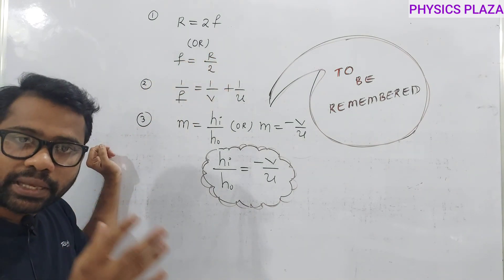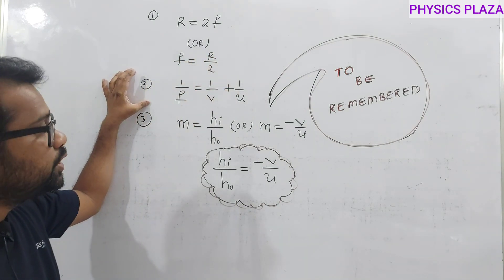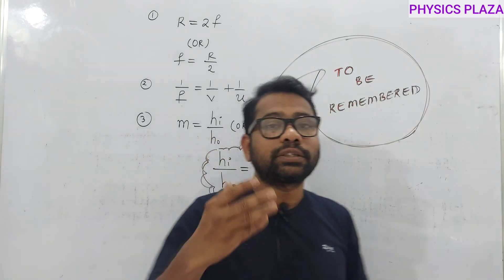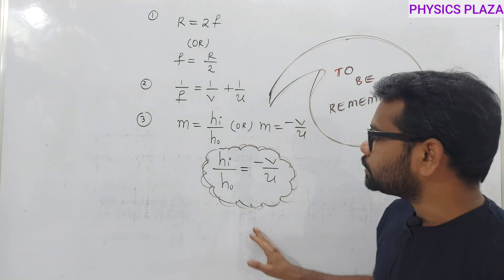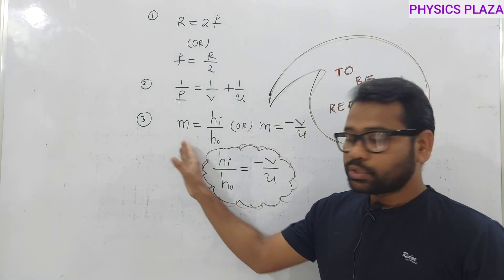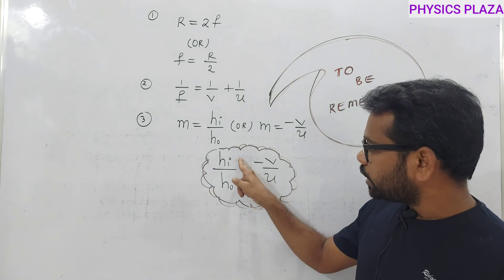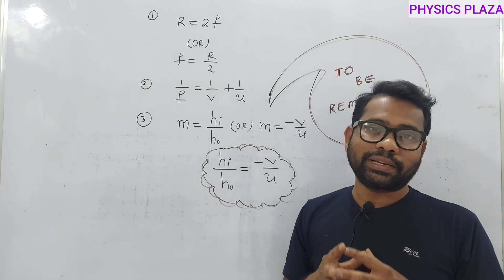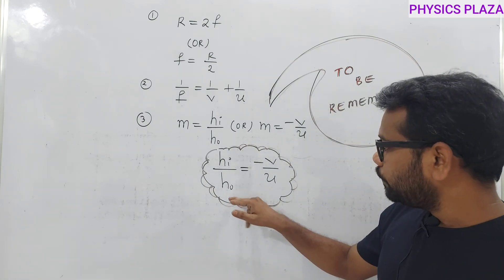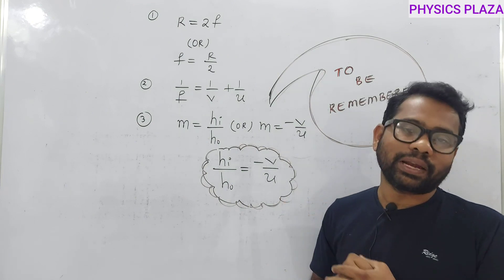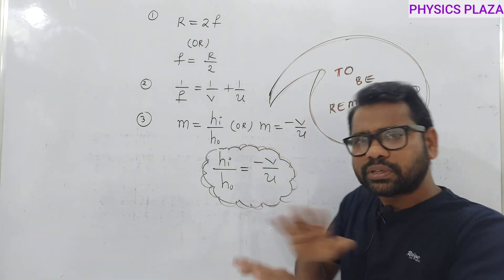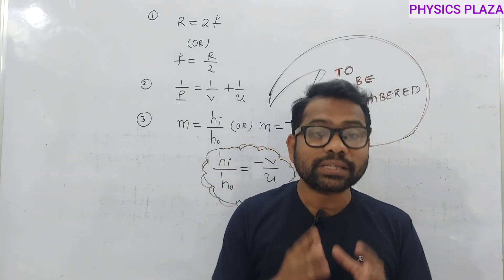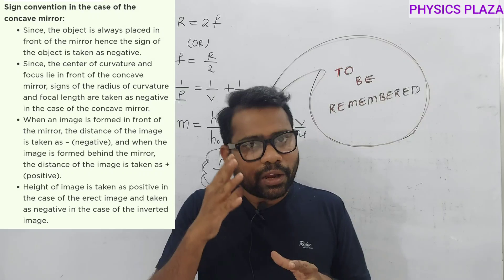The second formula is the mirror formula — very important. Whenever any two of the three physical quantities (f, v, u) are given, the third can be calculated. The third formula is based on linear magnification: image height by object height equals image distance by object distance. With these three formulas, along with sign convention rules, any numerical on spherical mirrors can be solved.